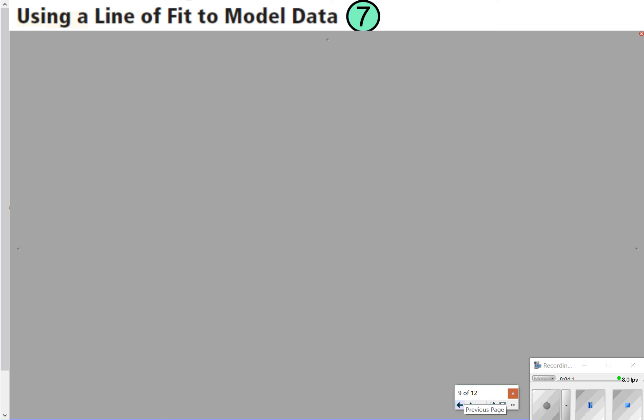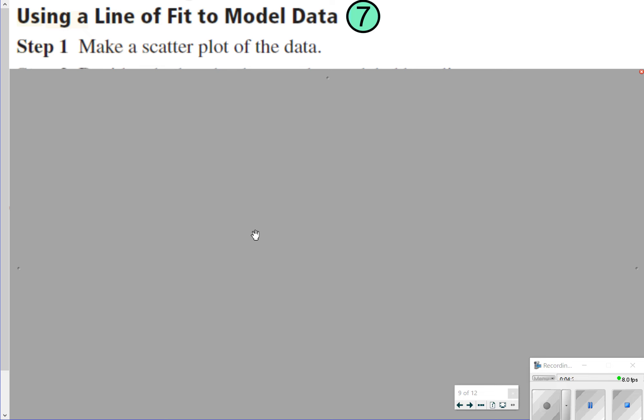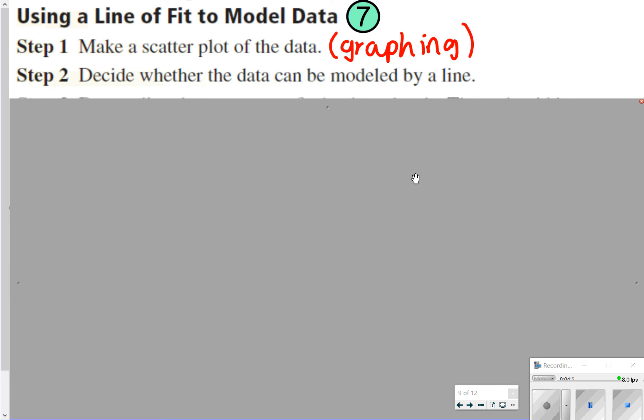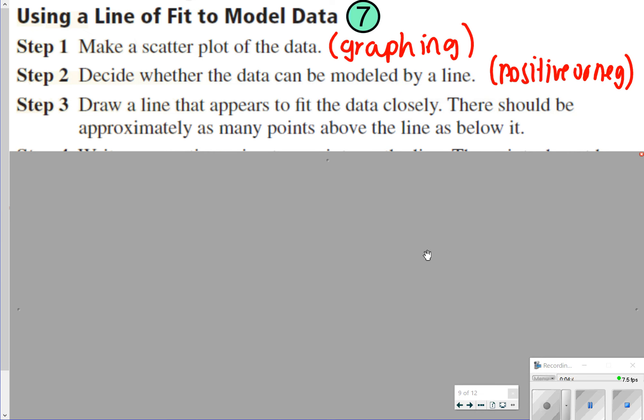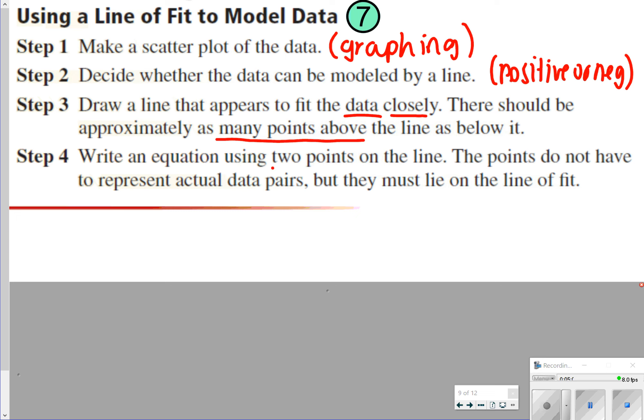The last thing we're going to talk about is how to use a line of fit to model the data. These are some steps I would like for you to write down. The first step is making a scatter plot of the data, that's just graphing your points. Next, determine whether the data can be modeled by a line. You just need a positive or a negative correlation here. Then you draw the line that appears to fit the data closely. You want to get as many points above the line as below it. Then you're going to write an equation using two points on the line. Remember, we learned this in lessons 4.2 and 4.1, using slope-intercept form or point-slope form.